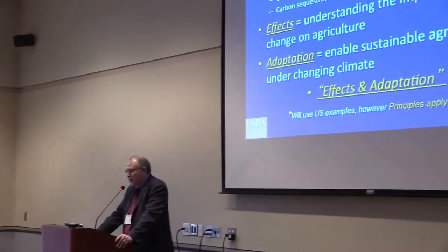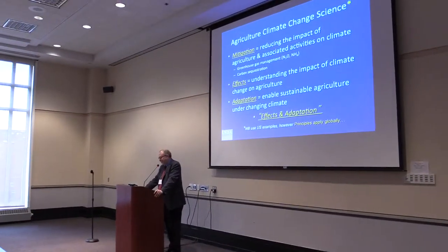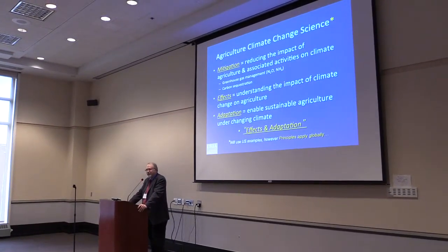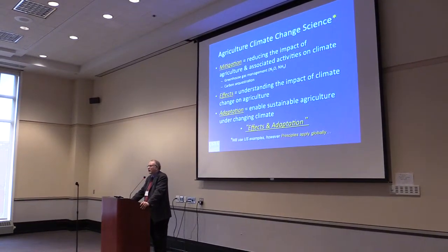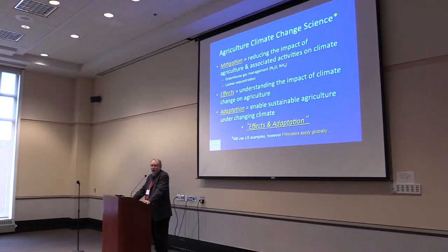When you talk about agricultural climate change science, we normally talk about mitigation, which is reducing the impact of agriculture on climate, and that has to do with greenhouse gas management. When you're talking about agriculture, the principal gas of concern is nitrous oxide, which is a byproduct of fertilization using nutrients, fertilizers, and so forth. It's also dealing with carbon sequestration.